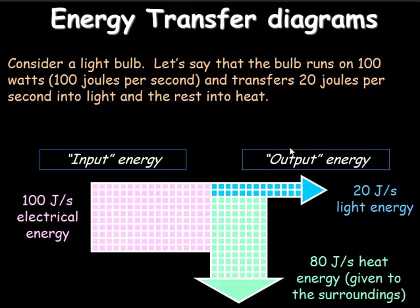I've broken my output energy into 20 joules per second of light energy and 80 joules per second is given out to the surroundings as heat. Now this is a Sankey diagram. It's important to recognize that I've simplified it by putting boxes in. The width of one box is equal to 10 joules per second, so the output of light energy is 20 joules per second with a width of two boxes, and for the wasted heat energy that's 80 joules per second, shown as eight boxes.